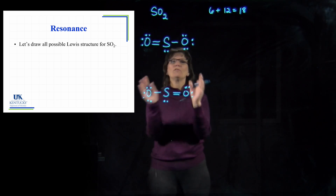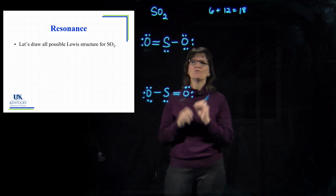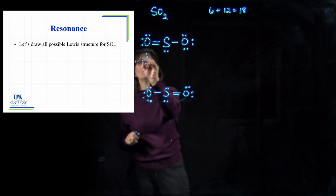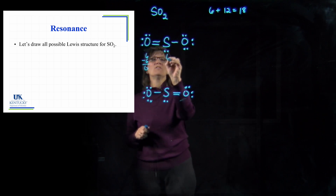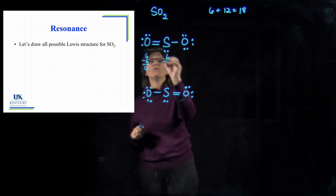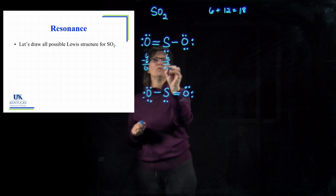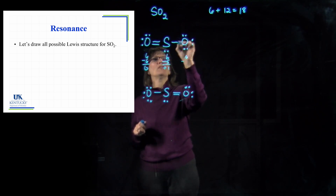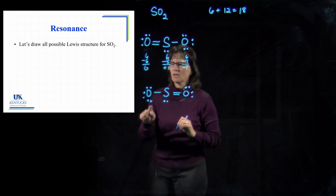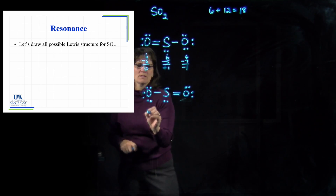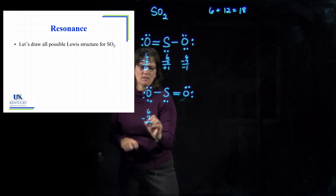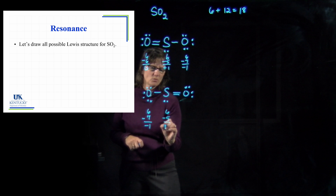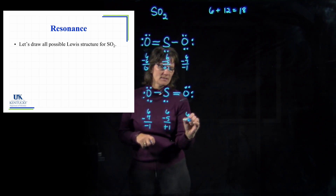These two structures are equivalent, but let's prove it with formal charges. For the first structure: six minus six is zero on one oxygen; six minus five is positive one on sulfur; six minus seven is negative one on the other oxygen. For the second structure: six minus seven gives negative one on that oxygen; six minus five gives positive one on sulfur; and six minus six gives zero on the other oxygen.